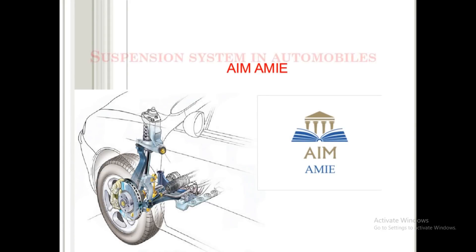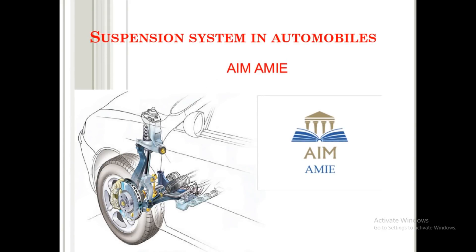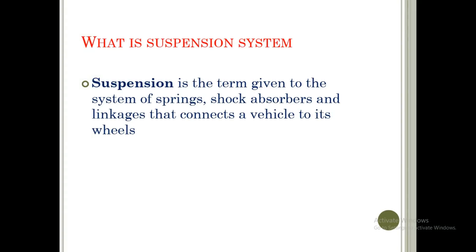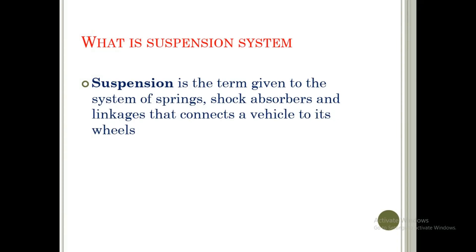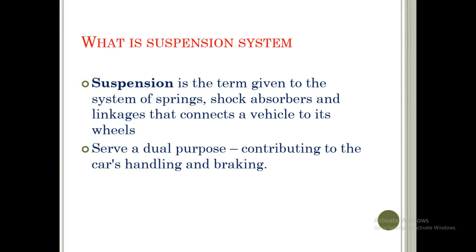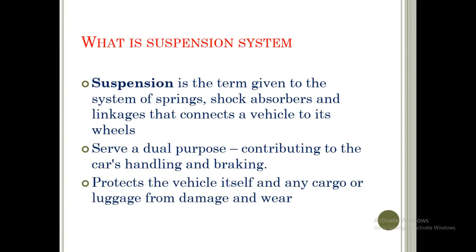Welcome back to MMI. In this video we are going to learn about the suspension systems in automobiles. First of all, what is a suspension system? Suspension is the term given to the system of springs, shock absorbers, and linkages that connects a vehicle to its wheels. It serves a dual purpose: first, contributing to the car's handling and braking; second, protecting the vehicle itself and any cargo stored inside from damage and wear.